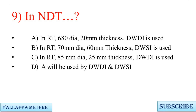Question 9: In NDT — A. In RT, 680mm diameter, 20mm thickness, DWDI is used. B. In RT, 70mm diameter, 60mm thickness, DWSI is used. C. In RT, 85mm diameter, 25mm thickness, DWDI is used. D. Both DWDI and DWSI will be used.